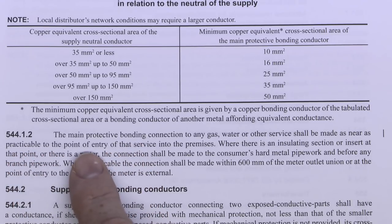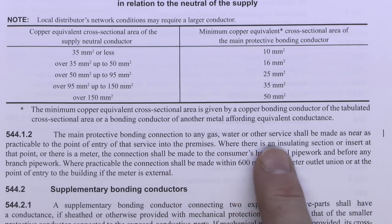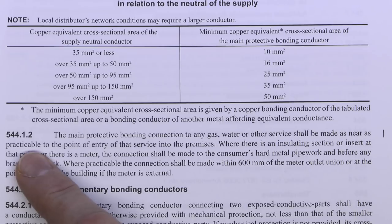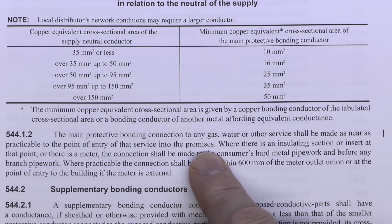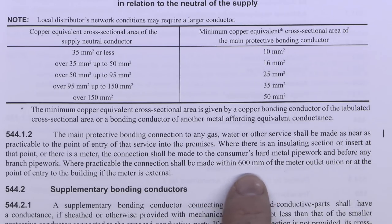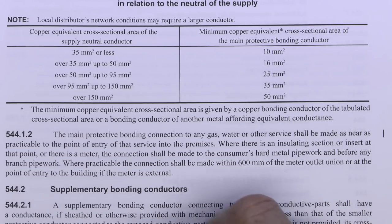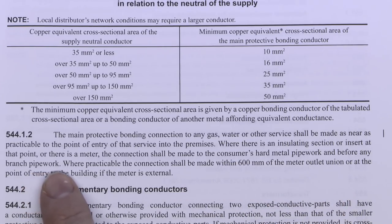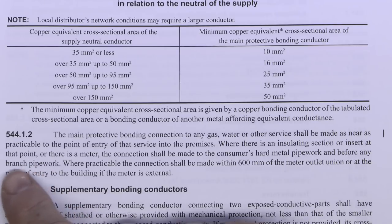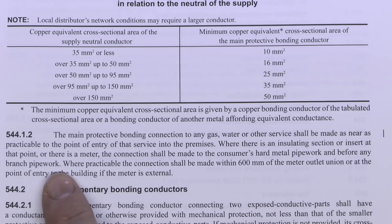The second part covers the location where the main protective bonding connection should be made. On any gas, water or other service it shall be made as near as practicable to the point of entry of that service into the premises. Where practicable it should be made within 600mm of the meter outlet, or the point of entry if the meter is external. It should also be made before any branch pipework, because if made after joints the pipework may be altered in future, potentially introducing plastic or insulating sections.